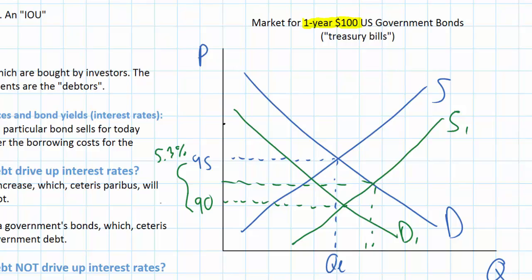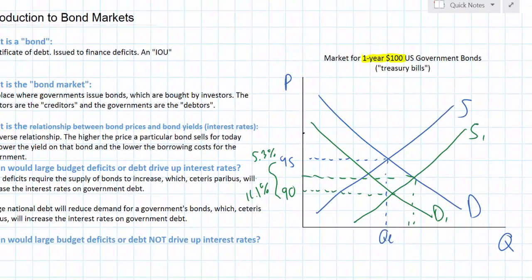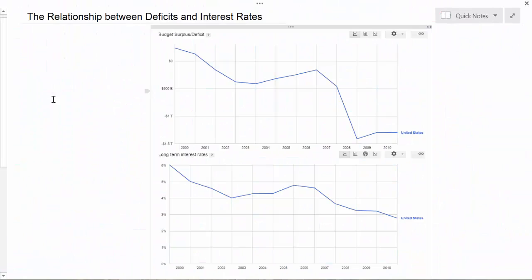Therefore large budget deficits and large national debts increase the cost of borrowing governments tend to face, assuming all else is equal. In this example, the borrowing costs increased from 5.3% at $95 per hundred-dollar bond to 11.1% when the price of a $100 government bond fell to $90.